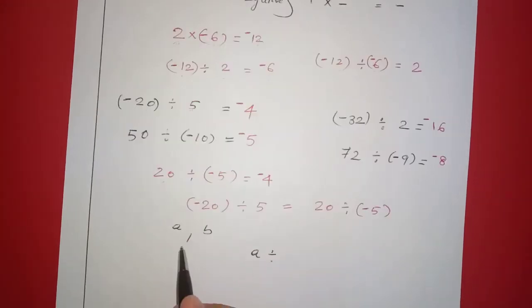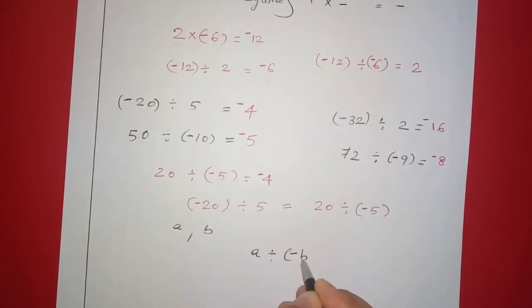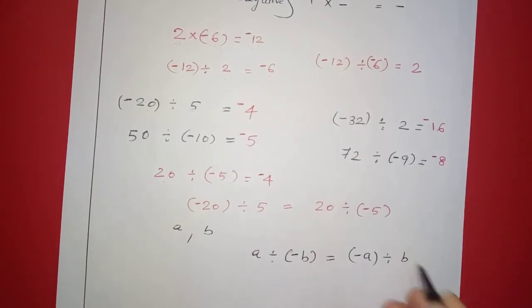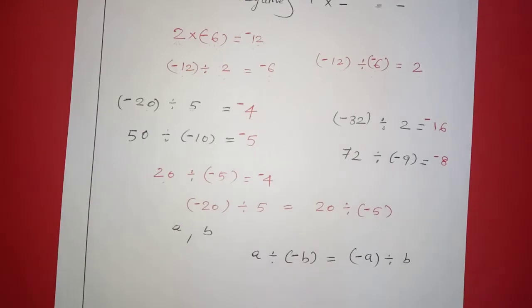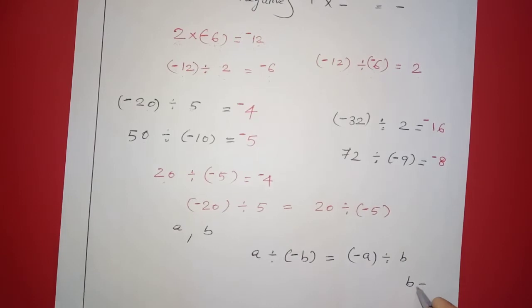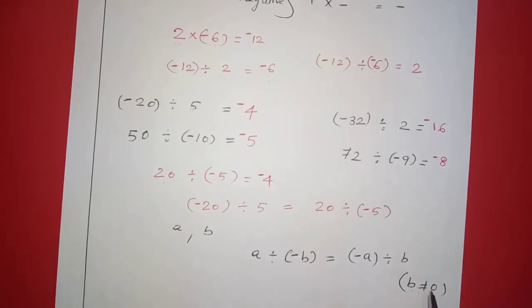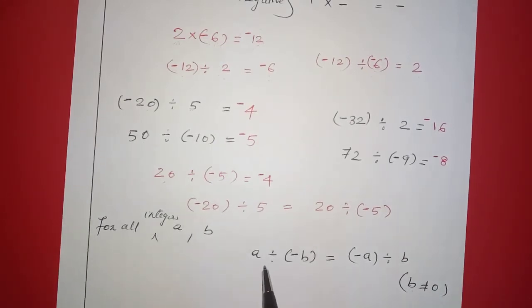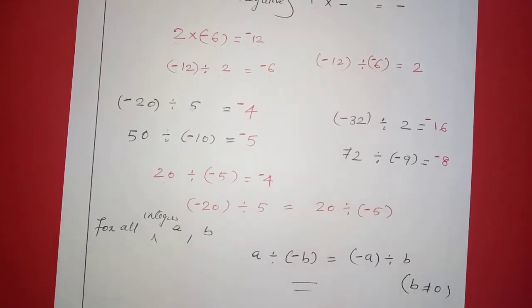Now we are going to do a division: a division negative b is equal to negative a division b. If we change the negative, we get the same answer. So b is not equal to 0; if we divide by 0 it is not defined. For all integers, a divided by negative b equals negative a divided by b, where b is not equal to 0.